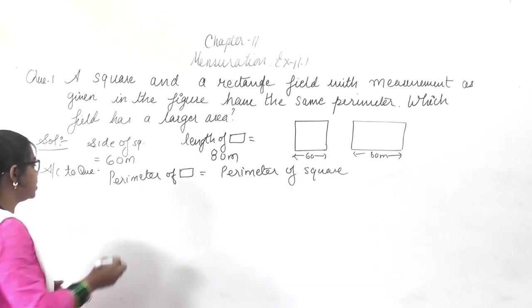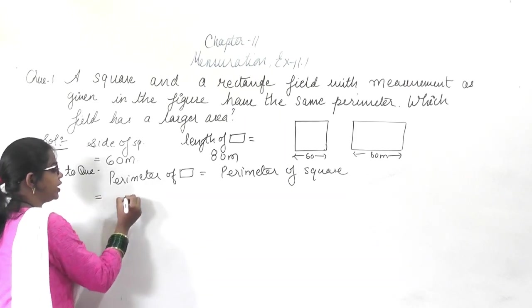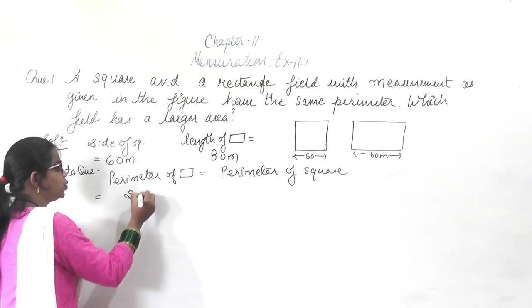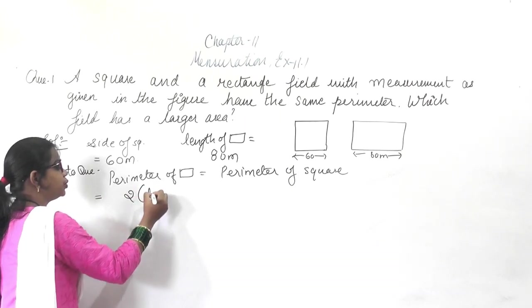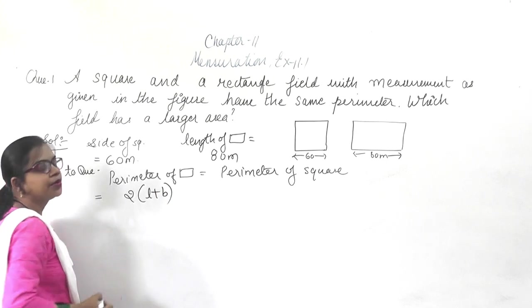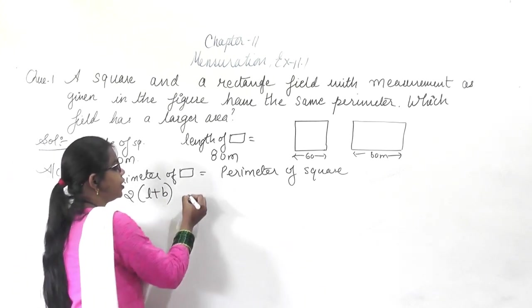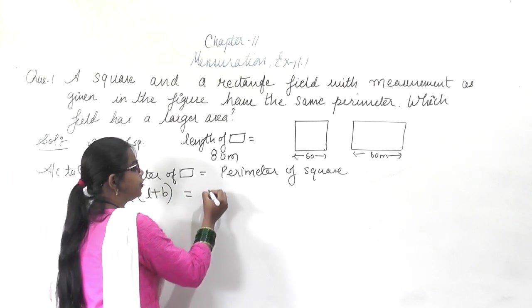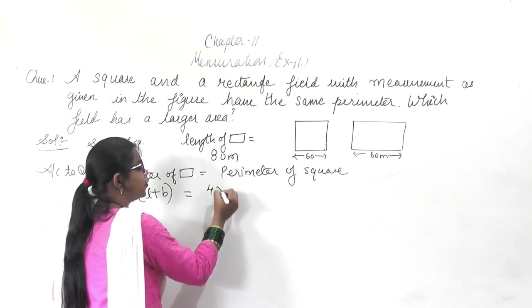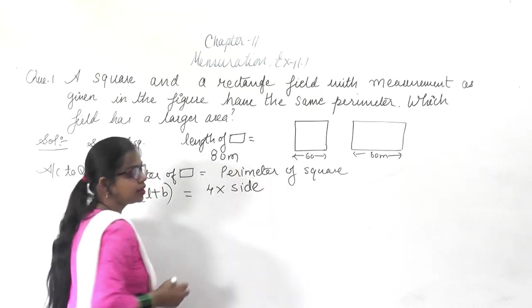The formula for the perimeter of a rectangle is 2 into (length plus breadth), and the formula for the perimeter of a square is 4 into side.